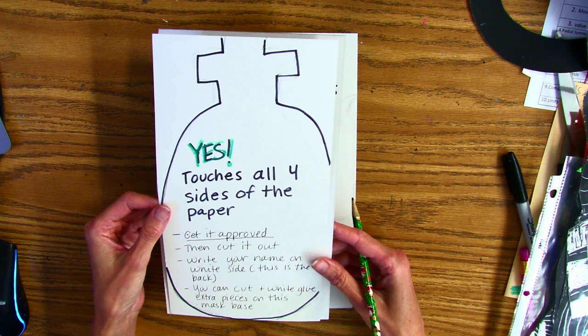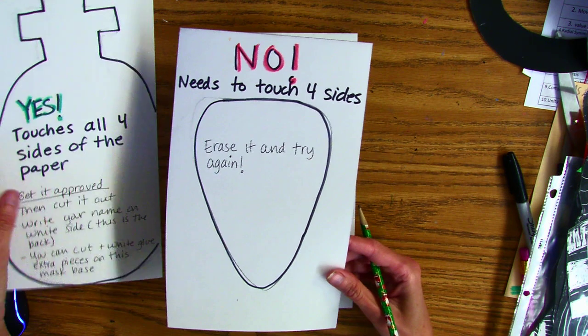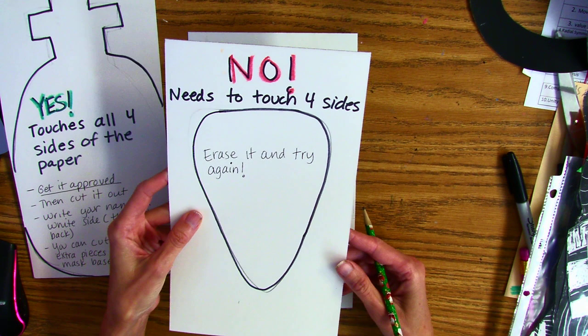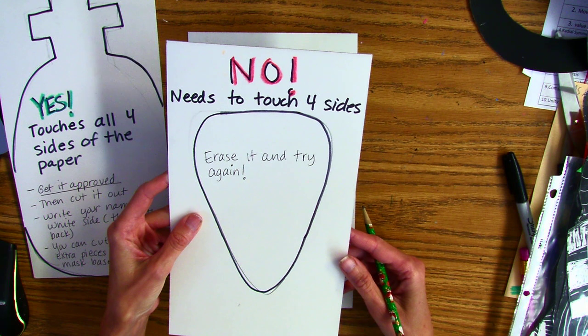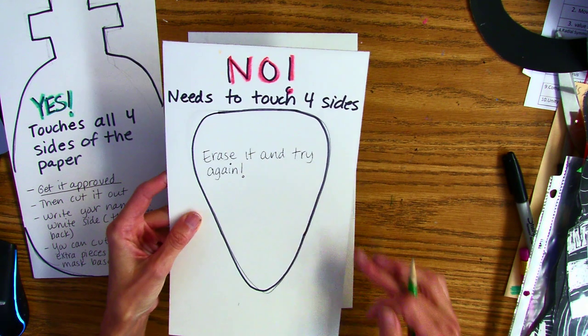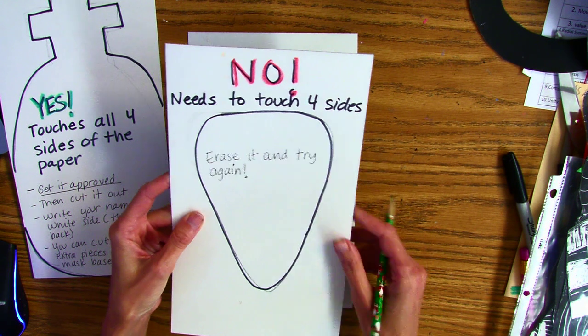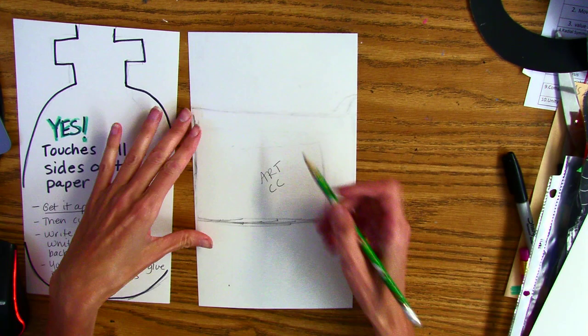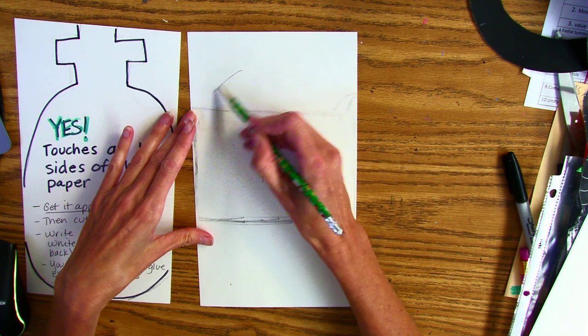Do not draw the mask in the middle of your paper like this. It's not even touching any of the sides at all, that means it's too small. So I'm going to draw the shape of my mask.